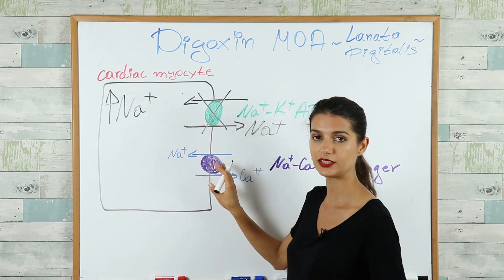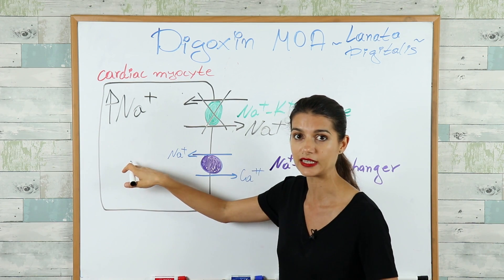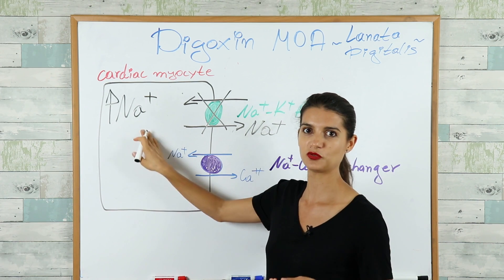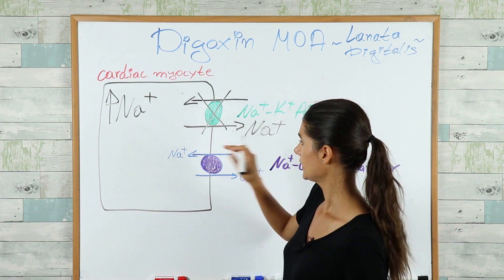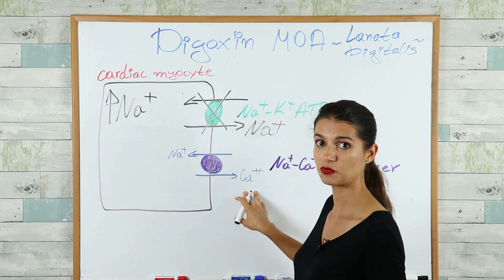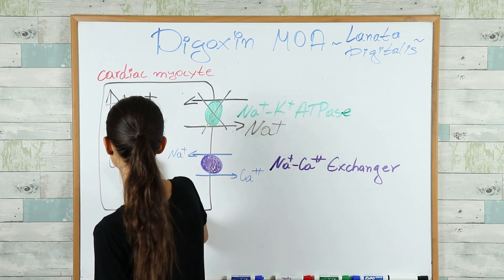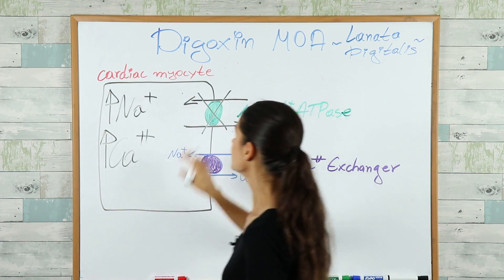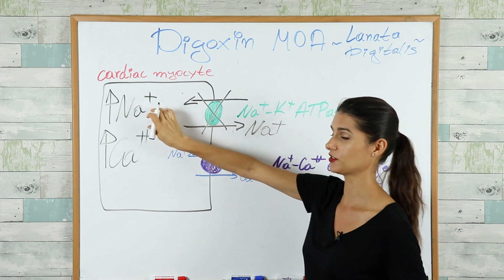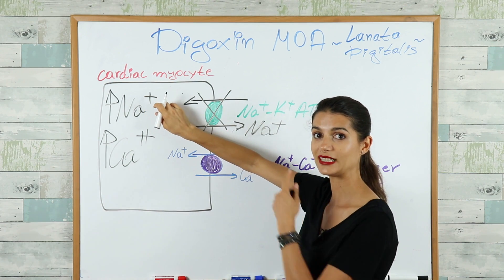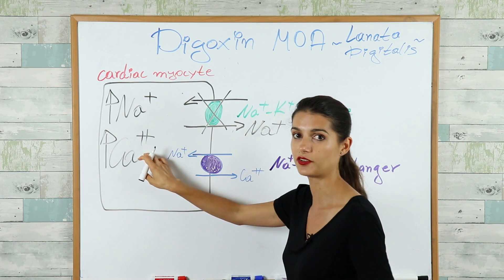As a result, the sodium-calcium exchanger is going to stop working, because it doesn't need to put more sodium inside the cell — there's already too much sodium inside. So the calcium ions, which are supposed to be brought out of the cell, will also increase intracellularly. To summarize: digoxin blocks the sodium-potassium ATPase → intracellular sodium increases → intracellular calcium increases.